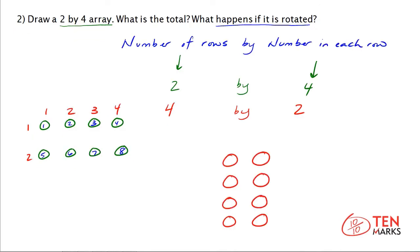Let me draw that for you. Notice now that there are four rows — one, two, three, four — and that each row has two in it: one, two. Now count and see what the total is now that you've rotated the array, and I'll do that in blue. You have one, two, three, four, five, six, seven, eight. Notice that when you've rotated the row and the number in each row, you still got the same total.